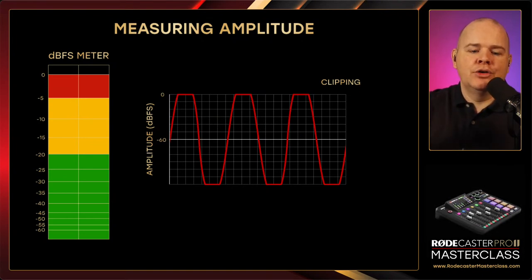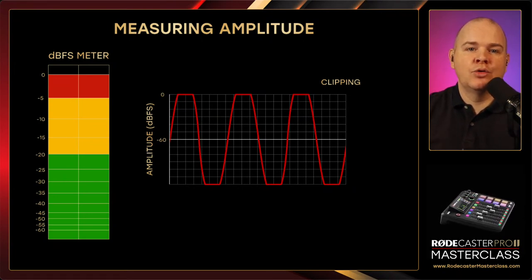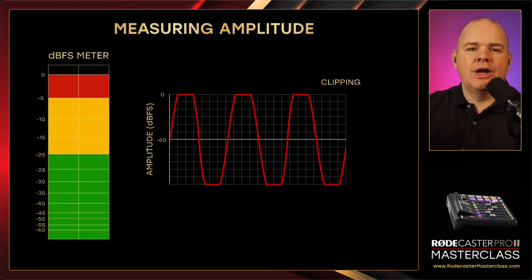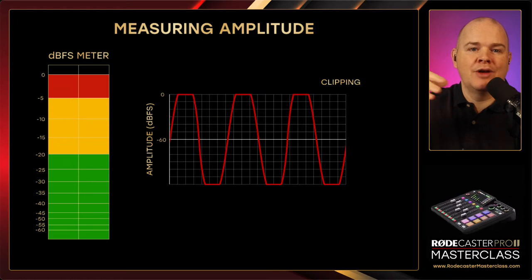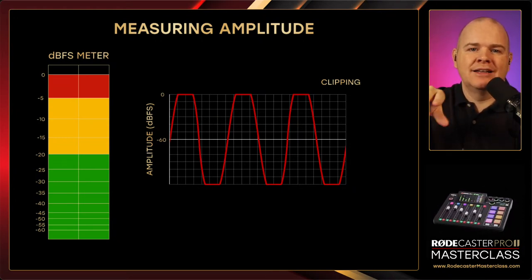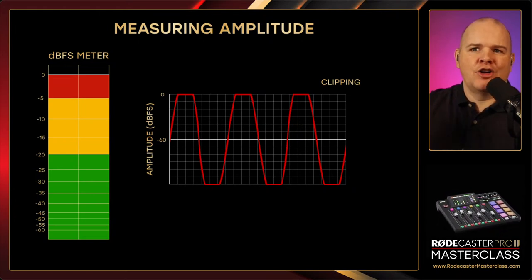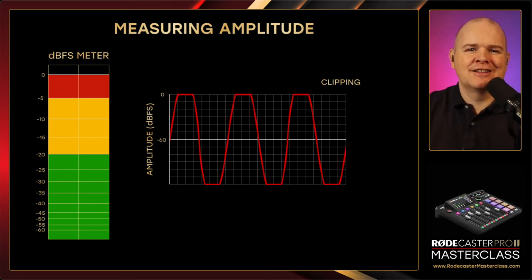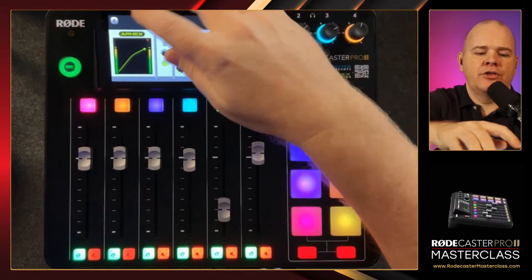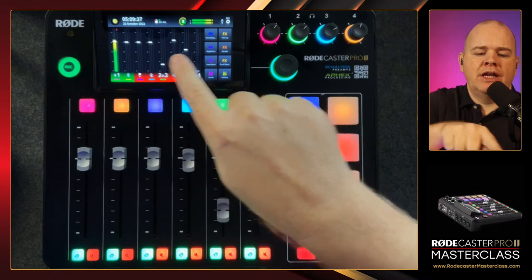That's where the scale used on the RodeCaster comes from — called the dBFS scale, or decibel full scale. It goes from minus 60, which is nothing, all the way up to zero, which is the maximum that can be recorded. So zero is at the top and minus 60 is at the bottom. You can actually add the dBFS scale to the meters on the RodeCaster by going into Settings, then Display, then Metering. If you switch to Broadcast mode, the level meters will include the dBFS markers and also the gain reduction indicator.